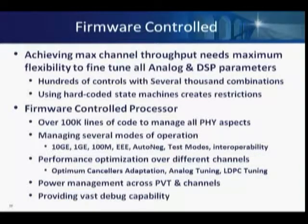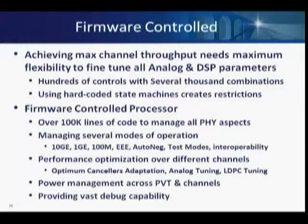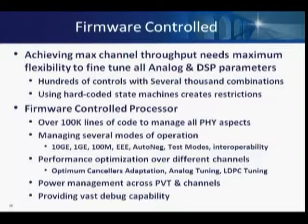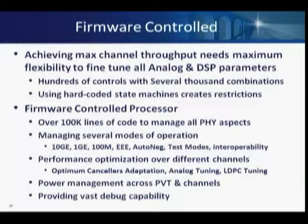All of the power management is done through firmware control. We have an on-chip controller running firmware with over 100,000 lines of code. It took about a year to really optimize and come to the best performance — fine-tuning analog and digital calibration to meet the performance targets. There was no way to use hard-coded state machines as was done in Gigabit; that approach was a failure for others. The firmware was a huge enabler to get the performance needed for 10G.